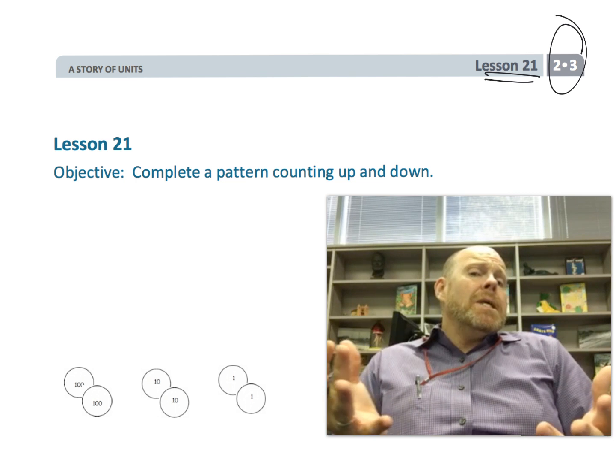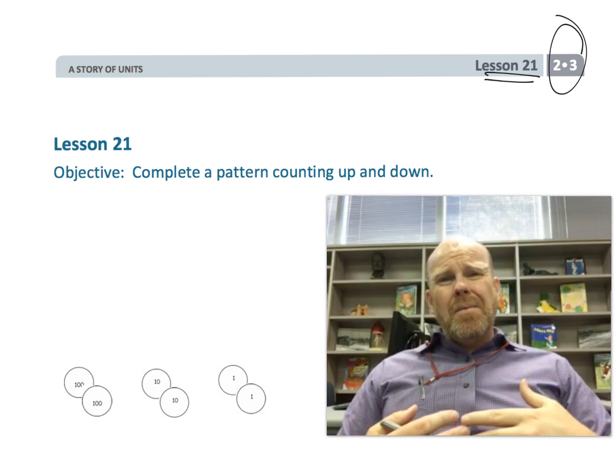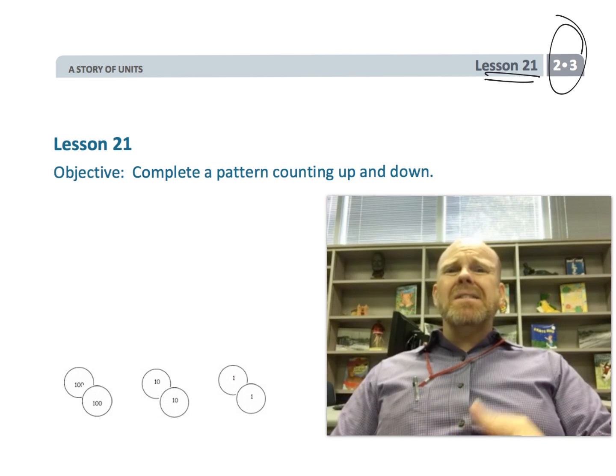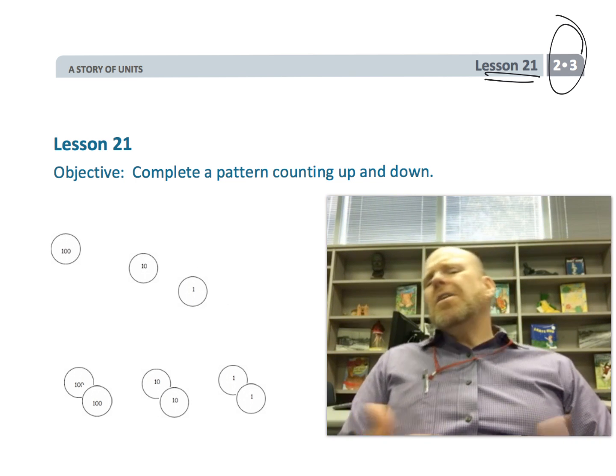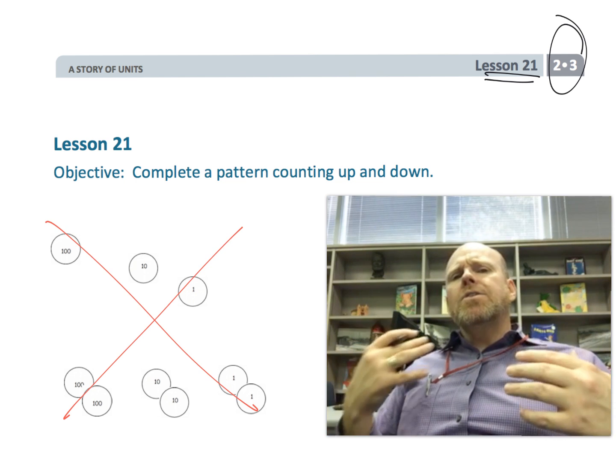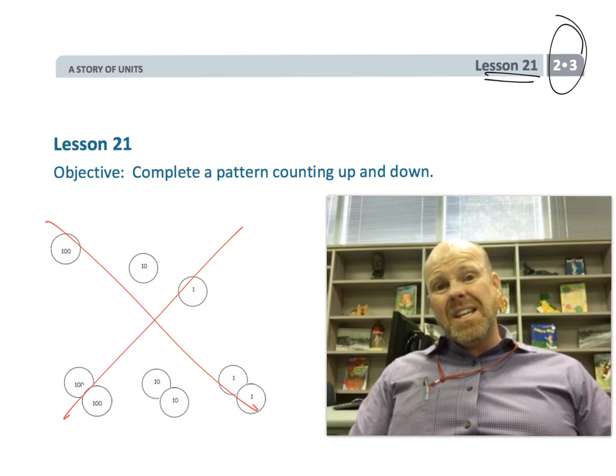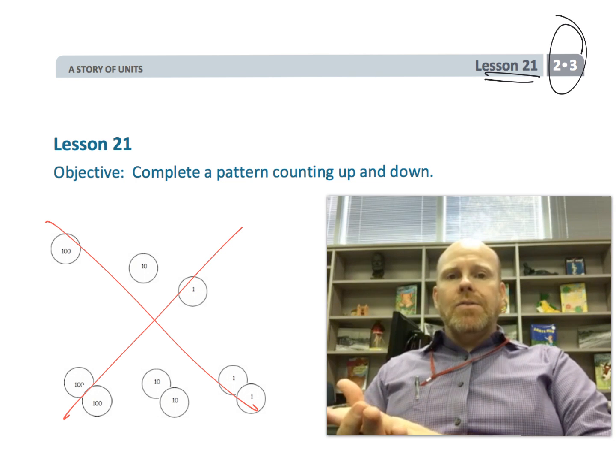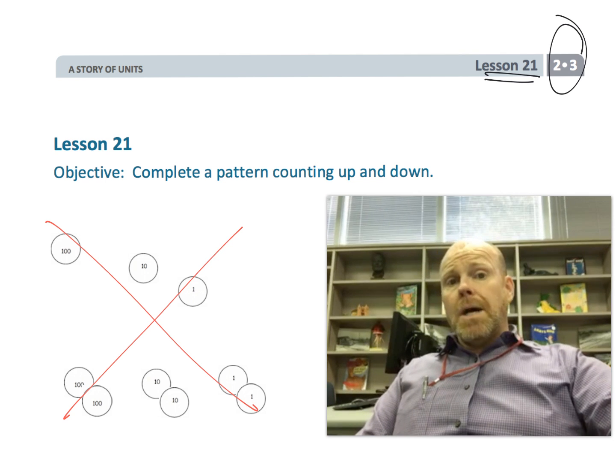And they're just going to be in a very numerical, abstract way, away from these place value disks and the charts and stuff. They're just going to be doing it with numbers, and they're going to be completing patterns. And this is where, as teachers, we can formatively assess our students to see how much of that place value stuff did they learn, and how much of it are we going to have to review as we move through future modules.